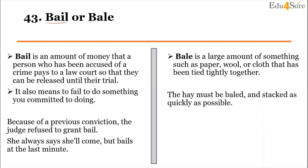Next word pair is 'bail' (B-A-I-L) or 'bale' (B-A-L-E). Bail is an amount of money that a person accused of a crime pays to the court so they can be released until tried. It also means to fail to do something you committed to doing. For example: 'She always says she'll come but bails at the last minute,' and 'Because of a previous conviction, the judge refused to grant bail.'